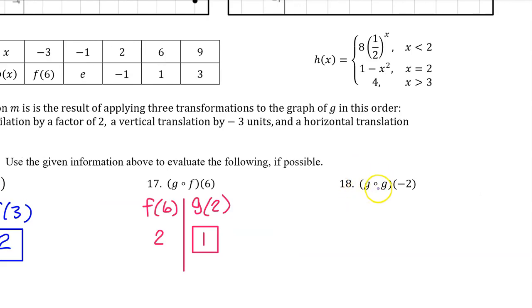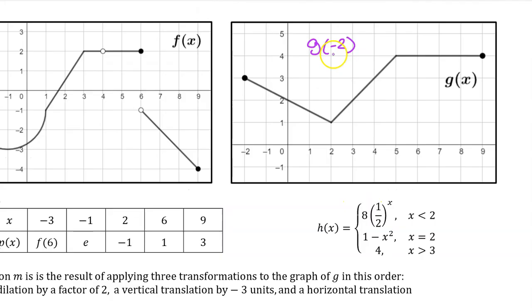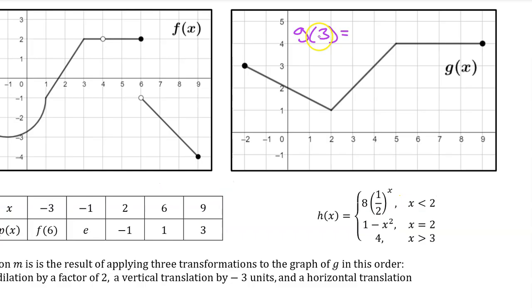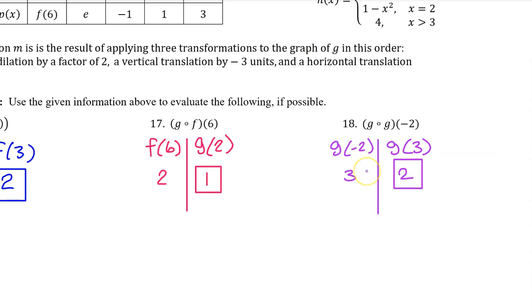Number 18. For the open circle notation we work from right to left. So first we do G at negative 2. Here's function G and the input value of negative 2. G at negative 2 is 3. Sliding to the left we get to the second G, but now we are doing G at 3. Here's function G again, and the input value of 3. G at 3 is 2. That's it.